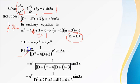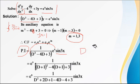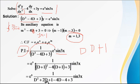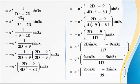Now PI = 1/(D² − 4D + 3) · e^x · sin(3x). Move e^x and replace D with D+1 (since the coefficient of x in the exponential is 1): (D+1)² − 4(D+1) + 3. Expanding: D² + 2D + 1 − 4D − 4 + 3, which simplifies to D² − 2D, with the constant terms cancelling (1 − 4 + 3 = 0). So we get e^x · 1/(D² − 2D) · sin(3x).